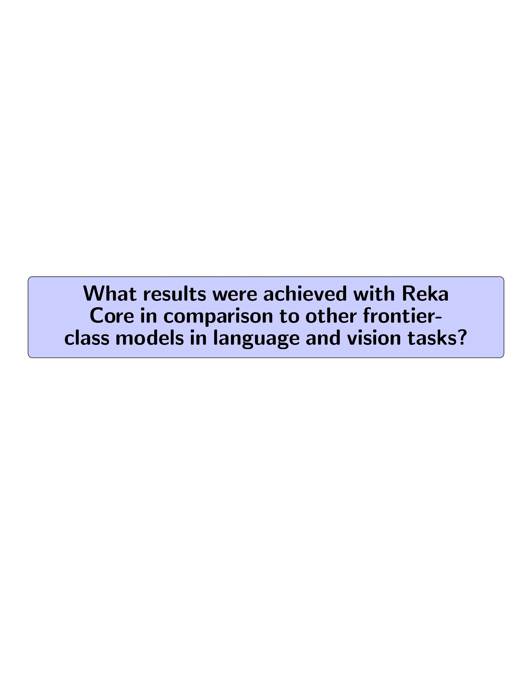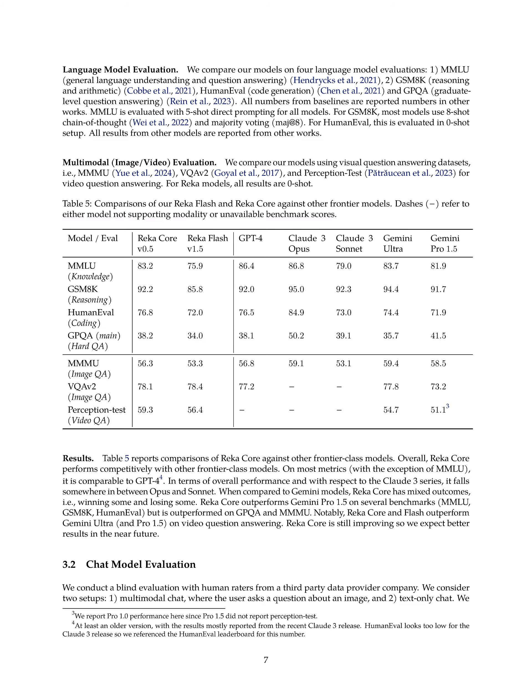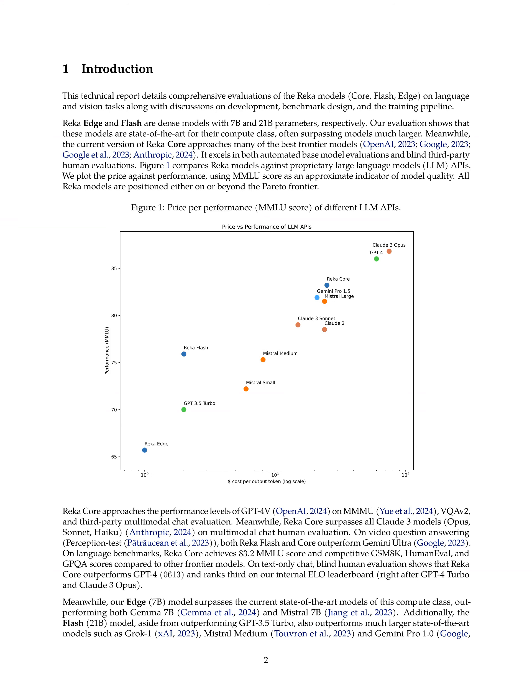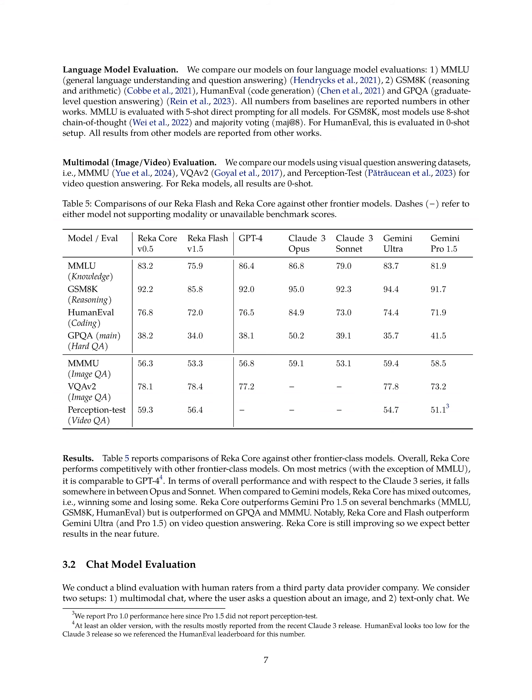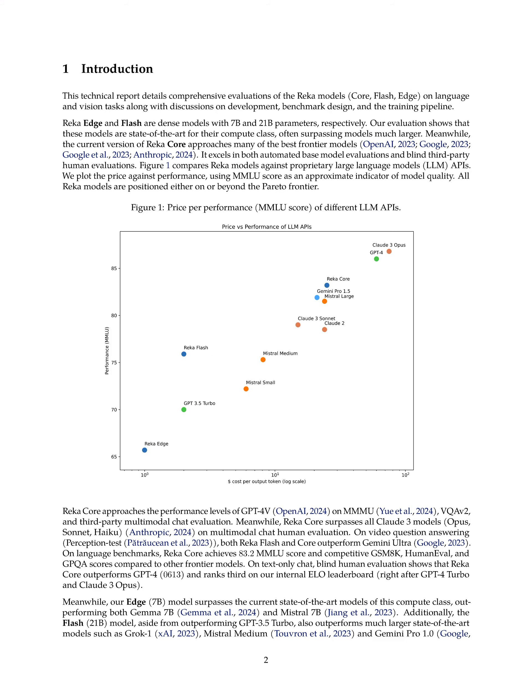What results were achieved with RECA Core in comparison to other frontier class models? RECA Core achieved competitive results in both language and vision tasks. It approached GPT-4V performance on MMLU, VQA-V2, and third-party multimodal chat evaluation, and surpassed all Claude-3 models — Opus, Sonnet, and Haiku — on multimodal chat human evaluation. In video question answering, both RECA Flash and Core outperformed Gemini Ultra. In text-only chat, RECA Core outperformed GPT-4 and ranked third on the internal ELO leaderboard, while also surpassing Gemini Pro 1.5 on several benchmarks.